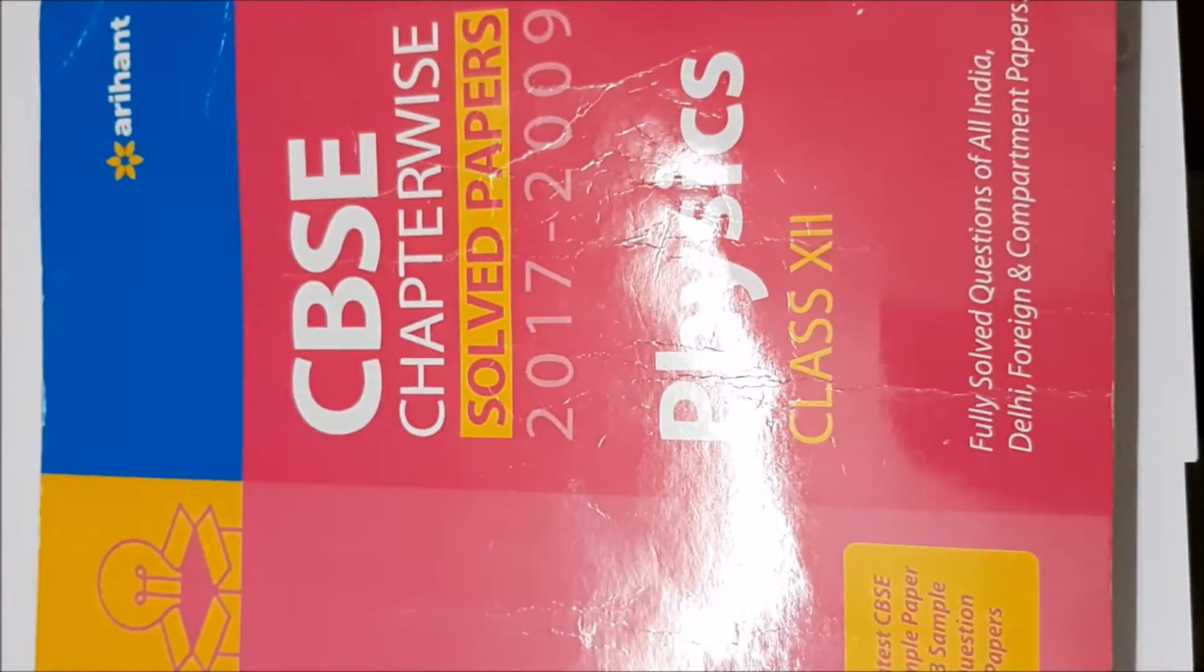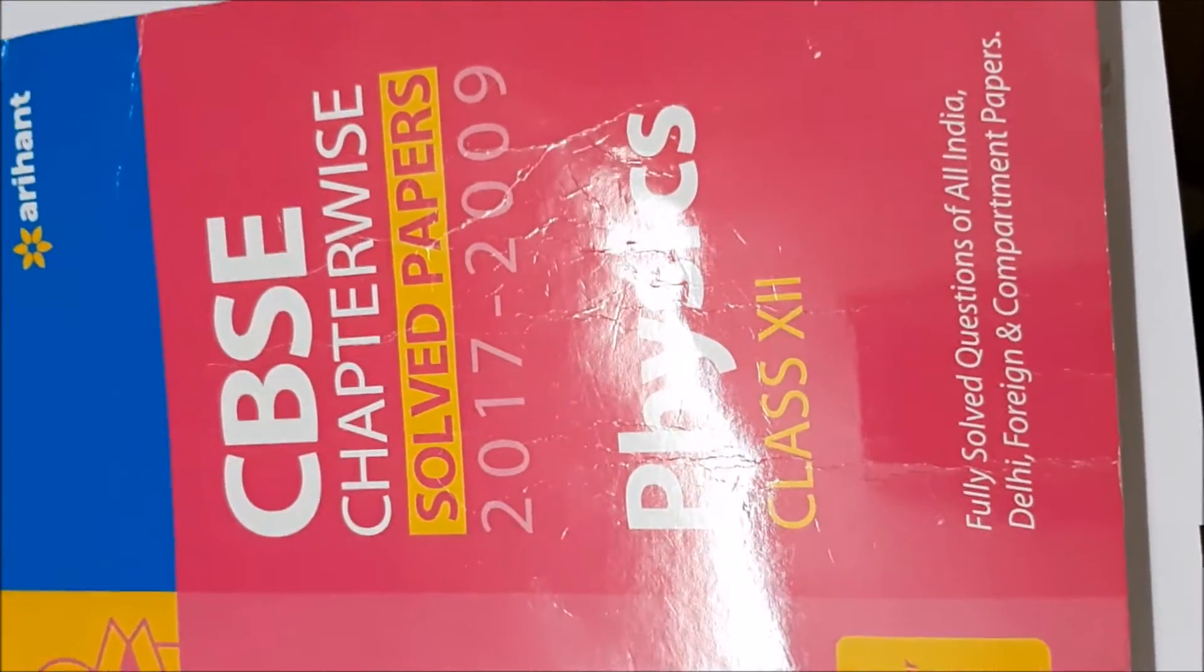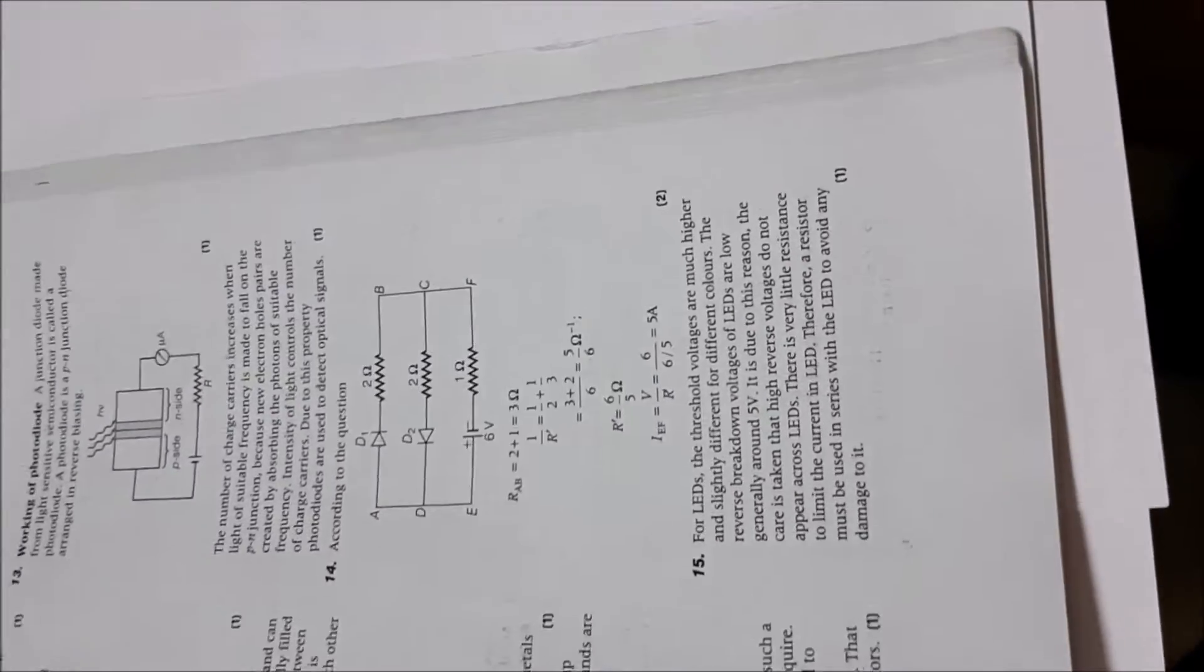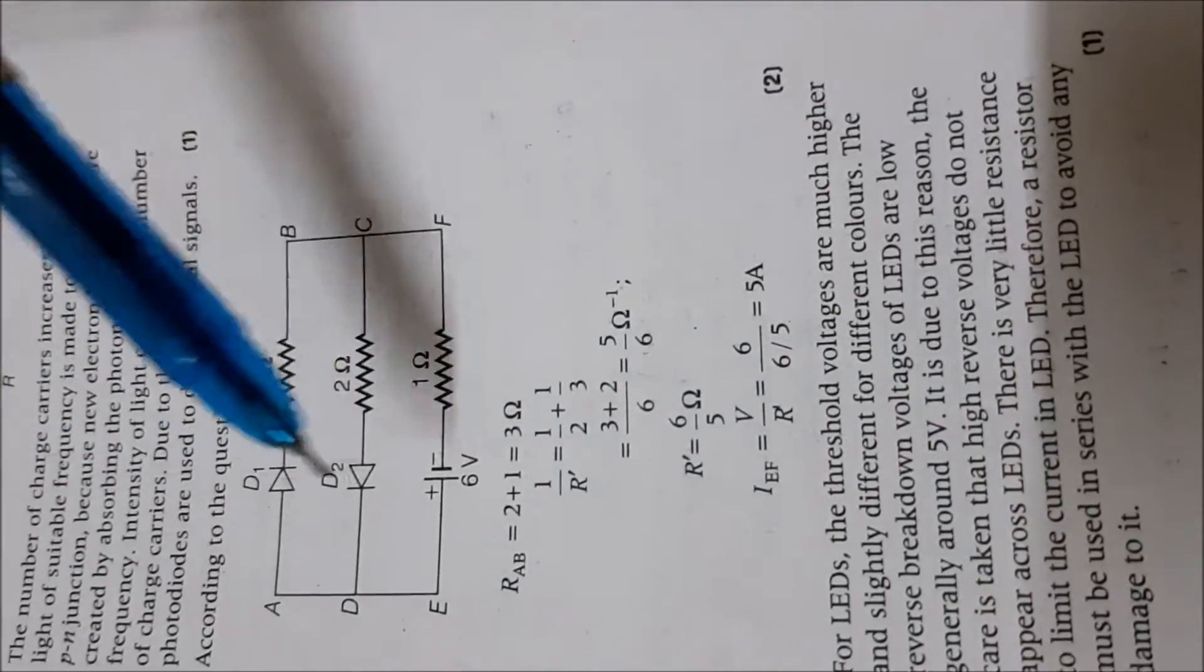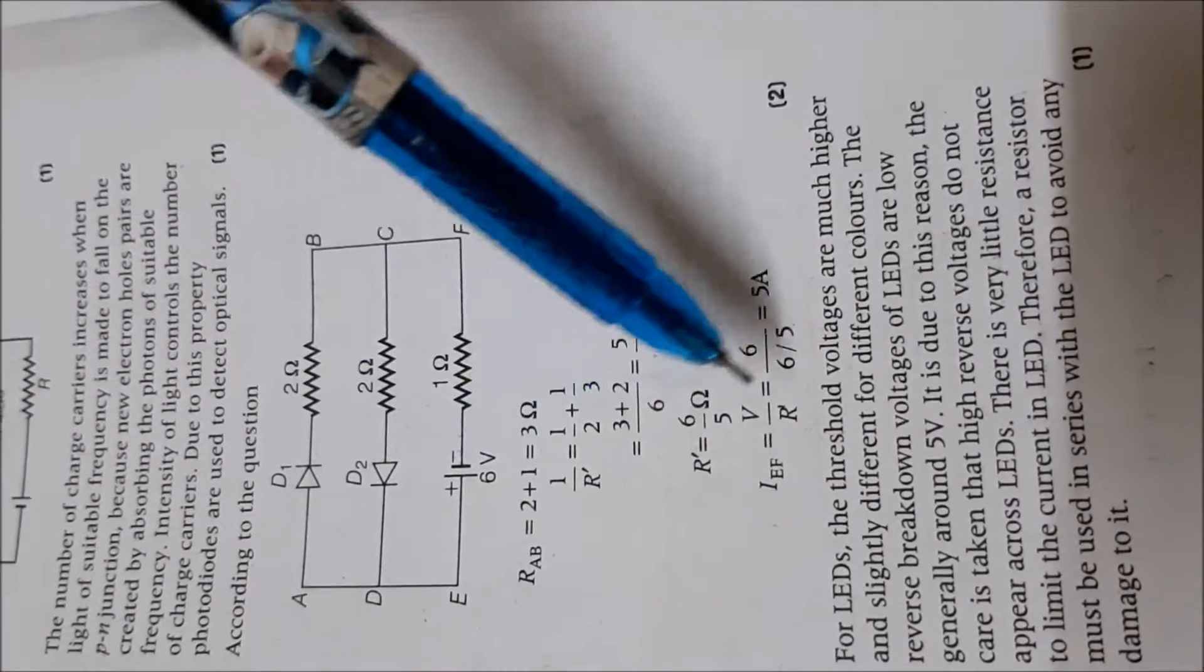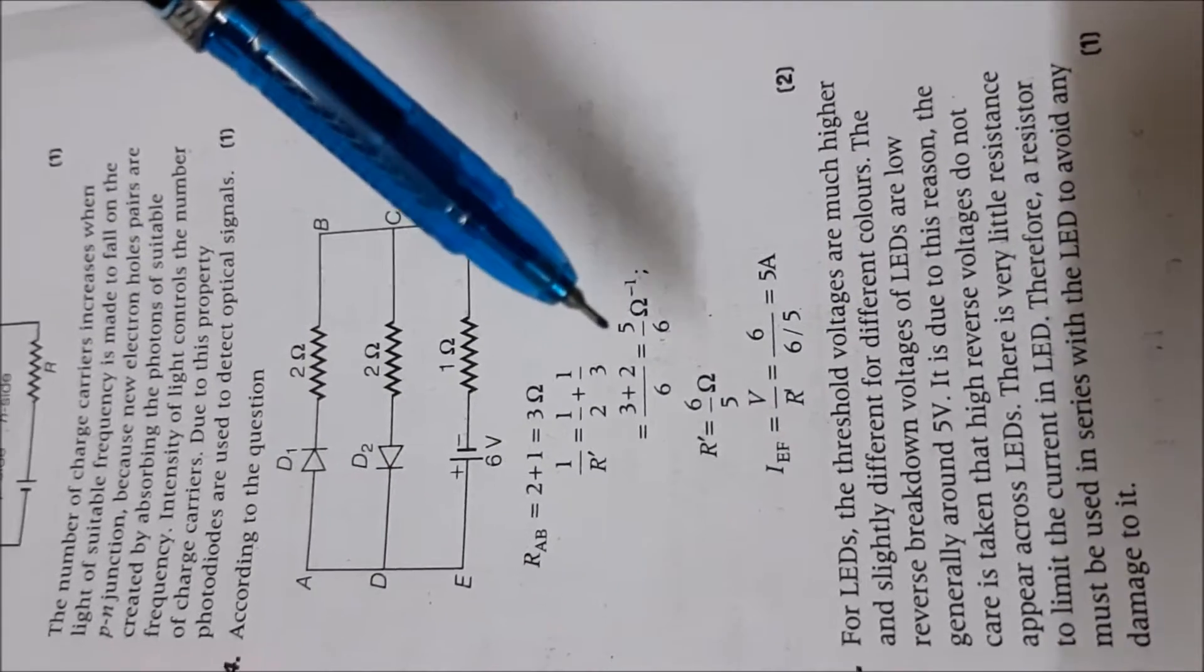Now in this book the solution of the problem is wrong. So if I turn the pages and go to that problem where the solution is given, see this is the solution given. As you can see they have given the complete solution and they have got the answer to be 5A. But this answer is wrong.